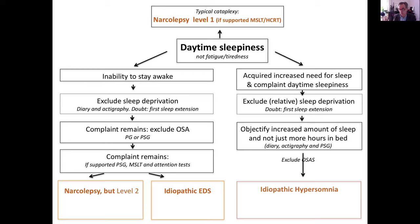If sleep extension doesn't solve the daytime problem, in some cases you may need to exclude sleep apnea. If you objectify there is indeed an increased amount of sleep and there is no sleep apnea, then call it idiopathic hyposomnia. For the other part — if there is an inability to stay awake and sleep deprivation could be the cause — first apply sleep extension, and only if complaints remain after sleep extension should you consider excluding sleep apnea. If symptoms still remain, then depending on the MSLT and polysomnography results, it will be either narcolepsy level 2 or a new category we call idiopathic EDS.